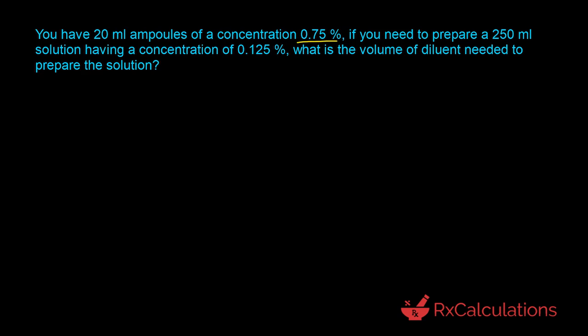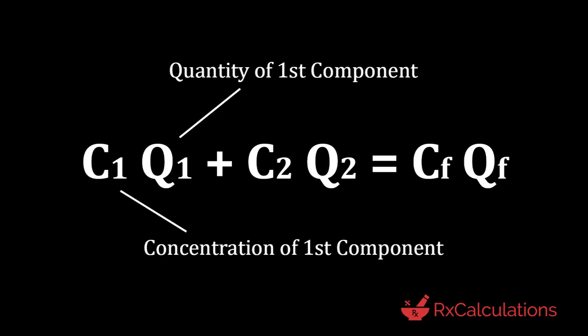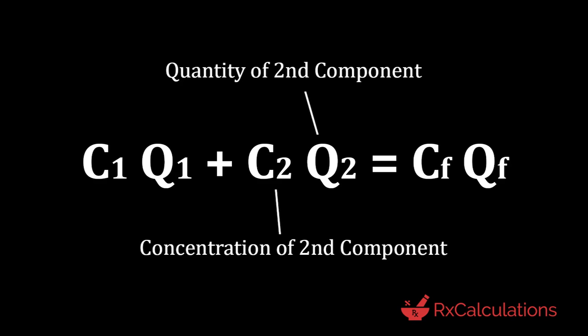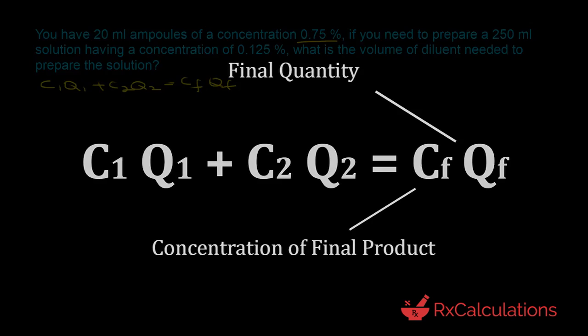That's a two-component situation. The equation we want to use is: C1·Q1 + C2·Q2 = Cf·Qf, where C1 is the concentration of the first component, Q1 is its quantity, C2 is the concentration of the second component, Q2 is its quantity, Cf is the final concentration, and Qf is the final quantity.